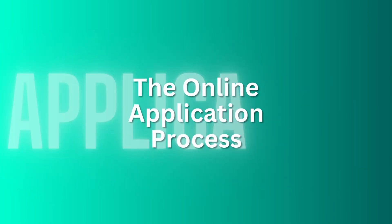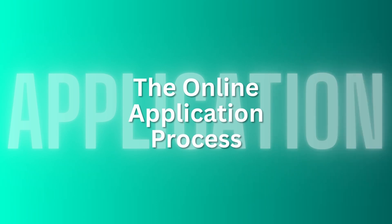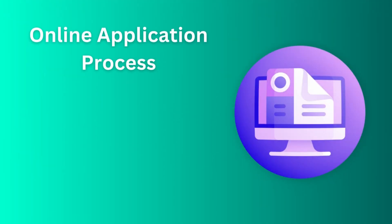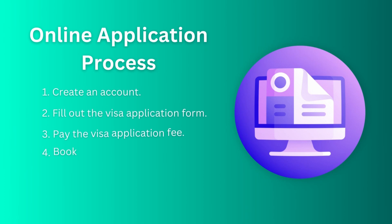Now let's discuss the online application process. It's pretty simple. You have to go to the official UK government website to apply for a visa, create an account, fill out the visa application form, pay the visa application fee, and book your biometrics appointment. We will discuss the last two points in detail.